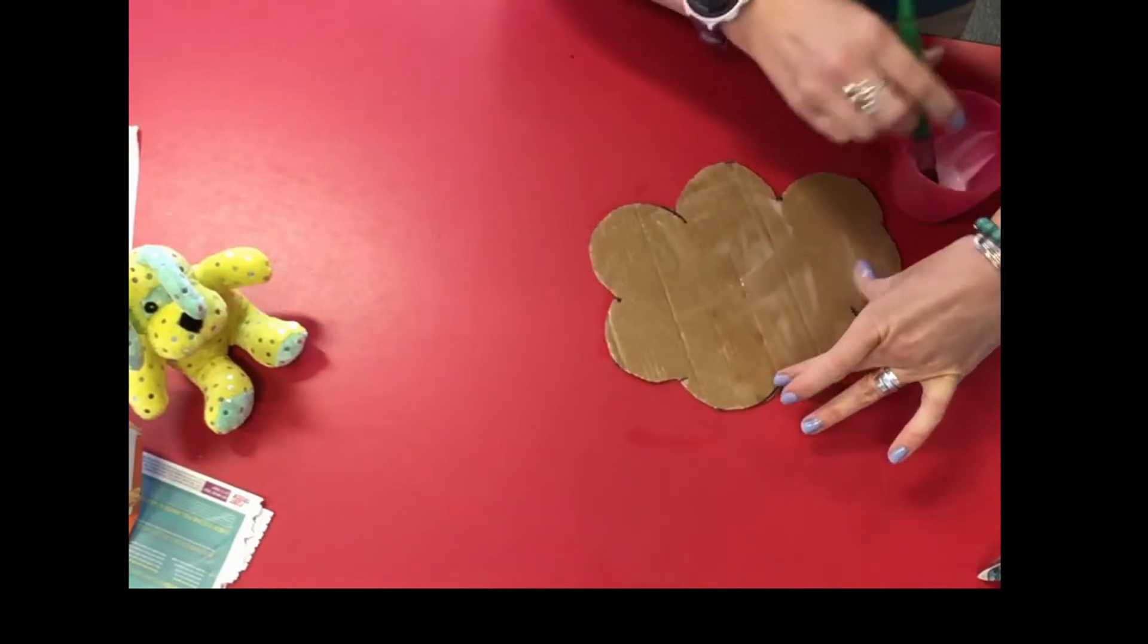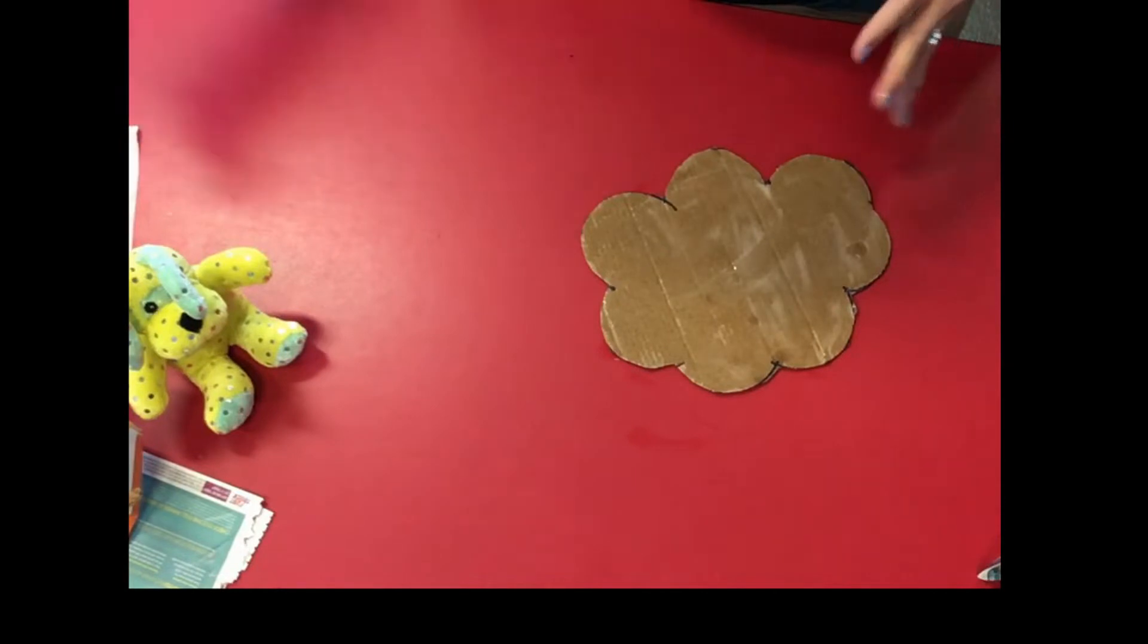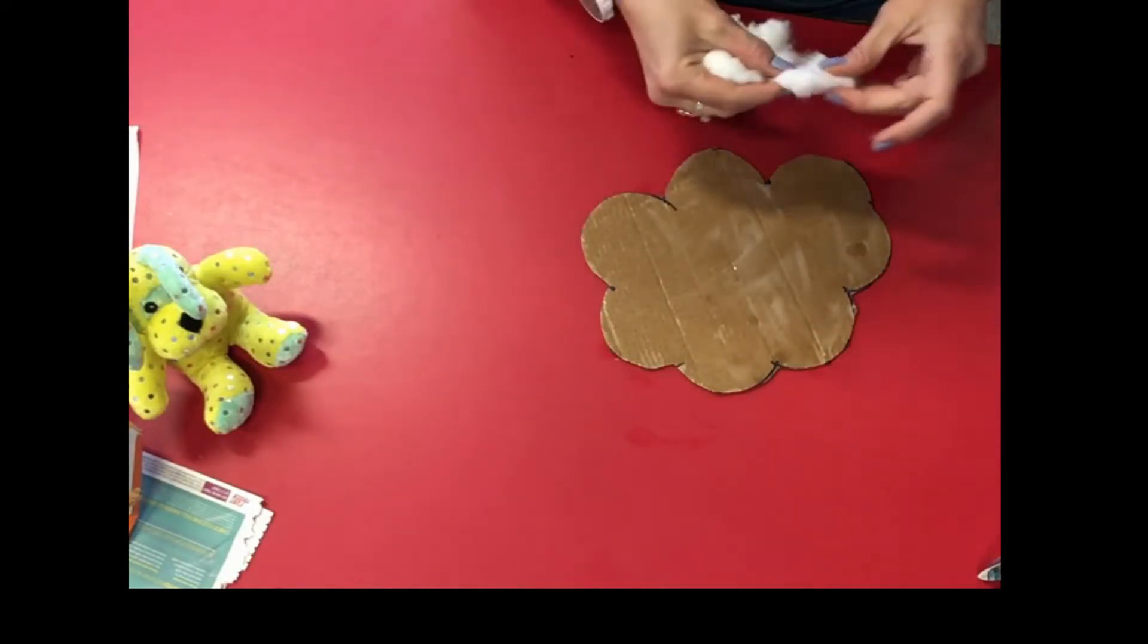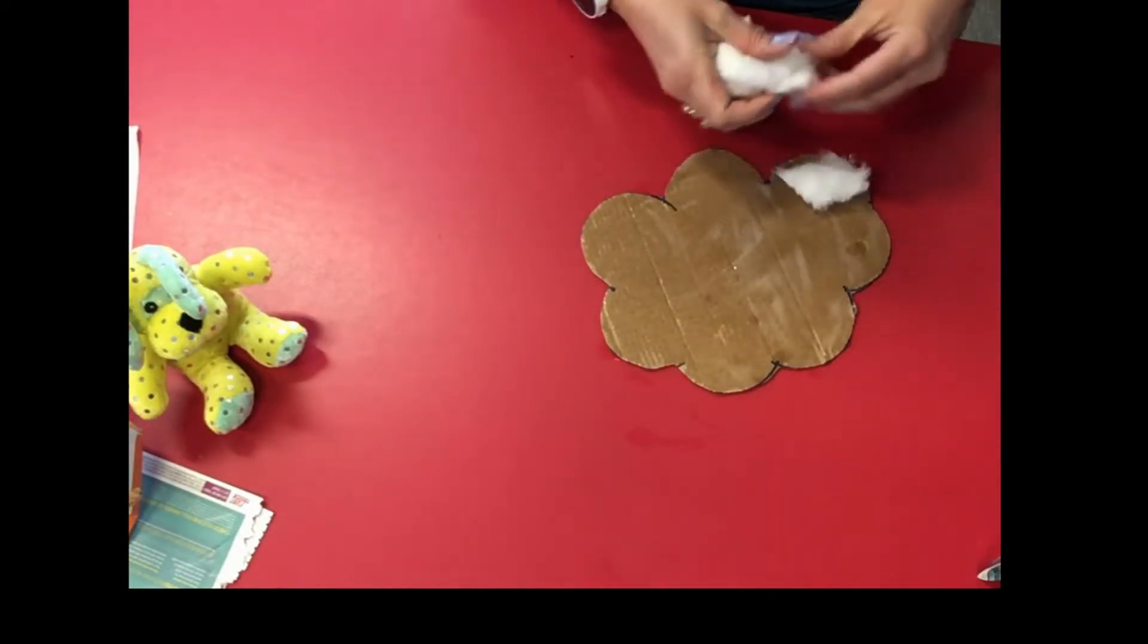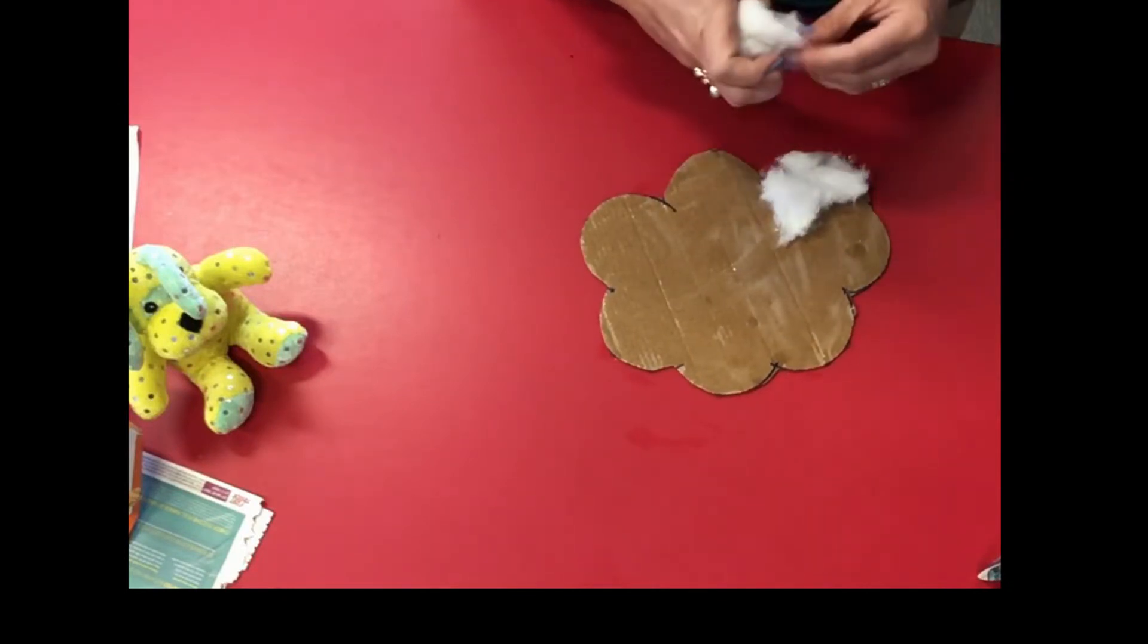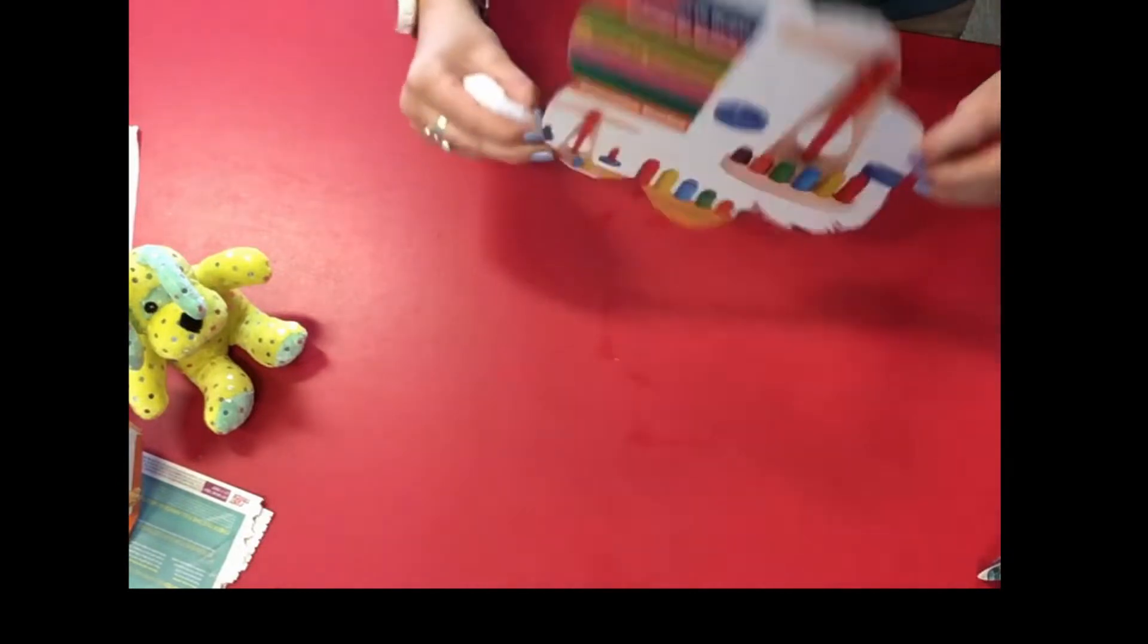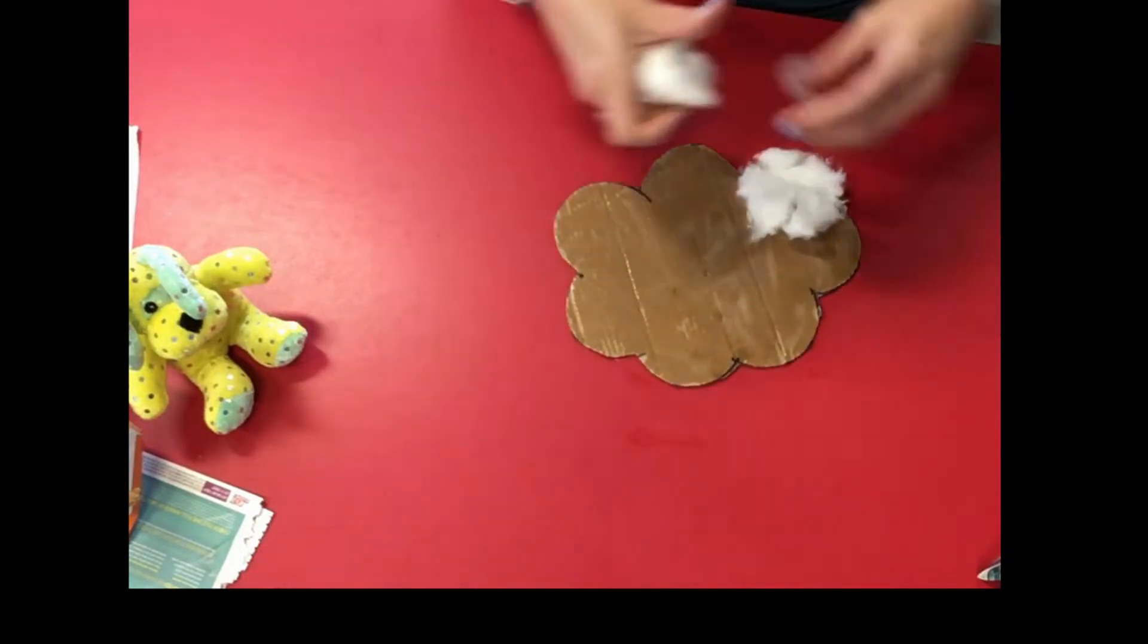Okay, so now I've got glue all over my card, I'm going to use the cotton wool to make a nice fluffy cloud. So you just pull the bits of cotton wool out and stick them on. Make sure you cover up all of the brown bit of your card. I always use the brown side of the card instead of the other side because it sticks a little bit better.